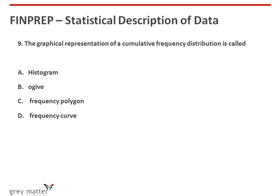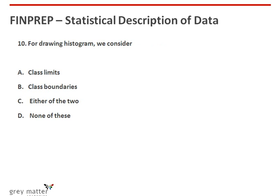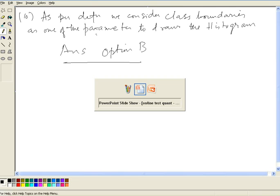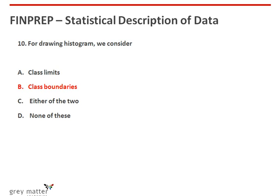Ninth question: the graphical representation of a cumulative frequency distribution is called an ogive graph. The answer is option B. Tenth question: for drawing a histogram, we consider class boundaries as one of the parameters. So the answer is option B, which says class boundaries.